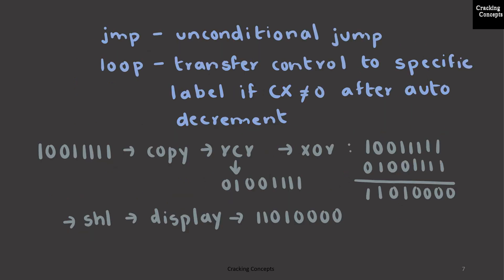JMP will also be used here, which is the unconditional jump, and we also use LOOP, which will transfer the control to the specified label as long as the value of CX register is not 0. Each loop will decrement the value of CX by 1.